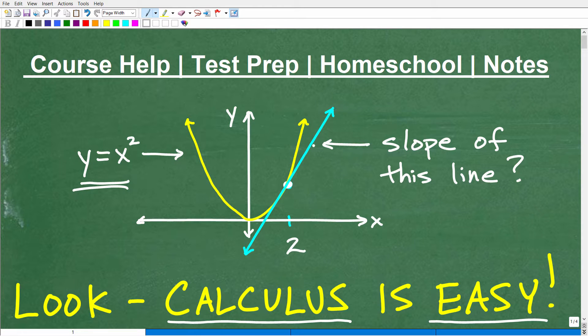And if you notice, it looks like it's just touching that yellow curve parabola at one specific point. So that is basically the definition of a tangent line. It's just touching at this one point, and that's where x is equal to 2.